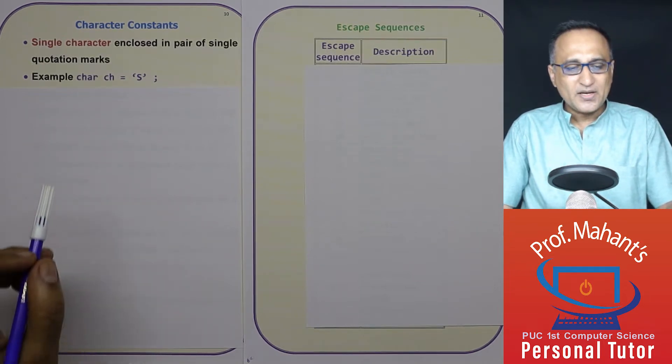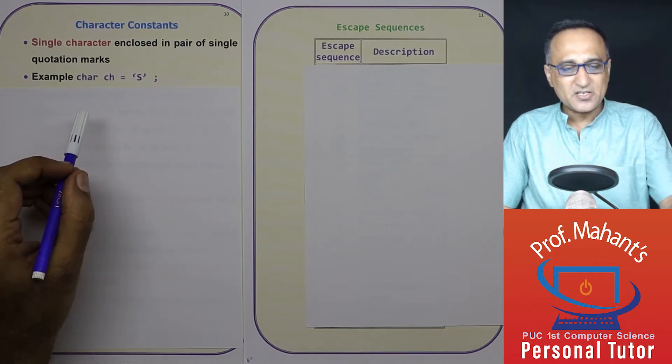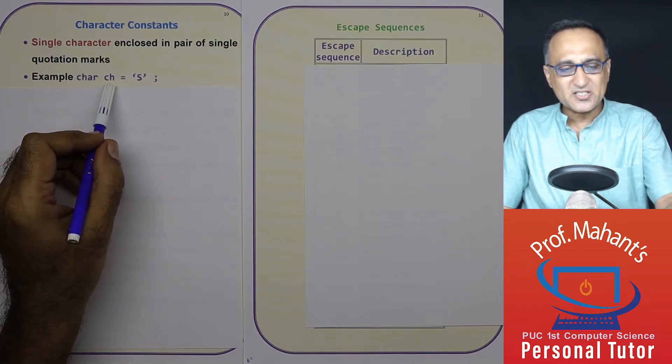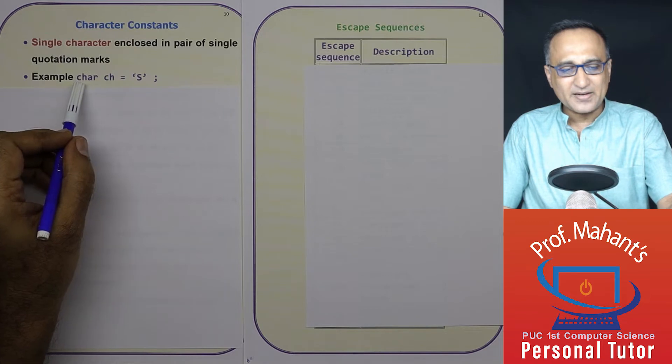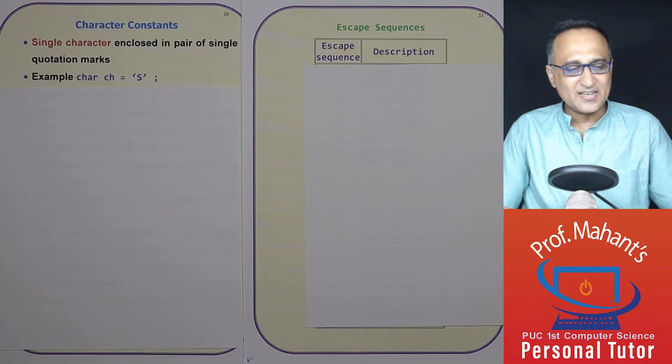If I have to declare a variable of the type character and give it the name ch and with the initial value 's', this is how I do it. So here I am saying ch has a data type of character, it is assigned or given a character constant value of 's' because this is in single quotes.